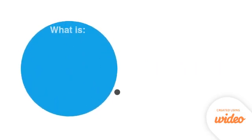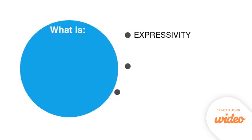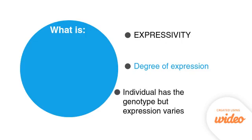The last term we are going over is expressivity. Expressivity is the degree to which a trait is expressed. It means the individual has the genotype for that trait, but the expression itself varies. Thinking back to the example of incomplete dominance, we saw that the offspring blended to give one color of the same shade. But in expressivity, there is variation in the phenotype.